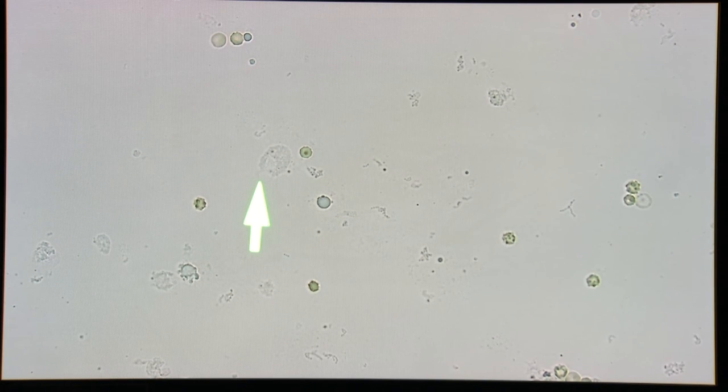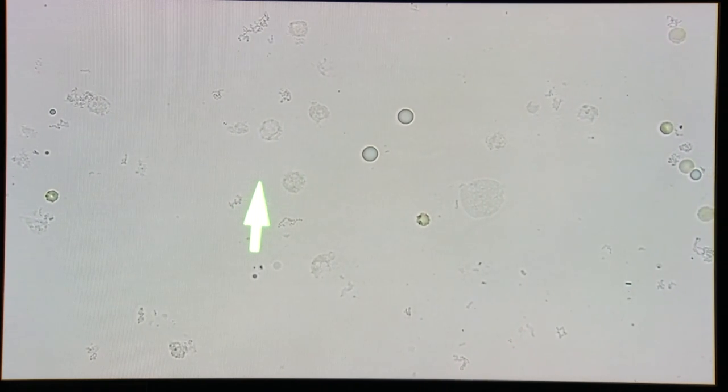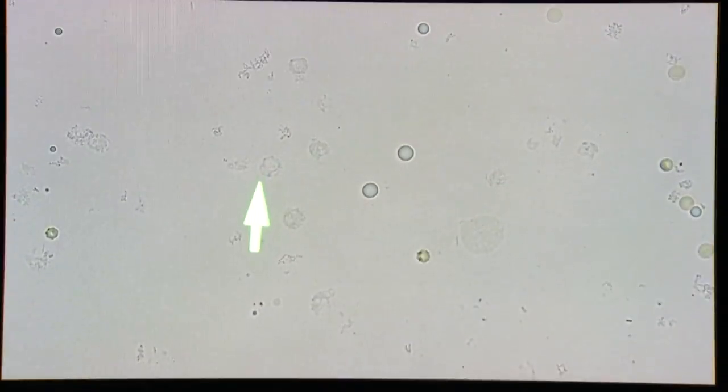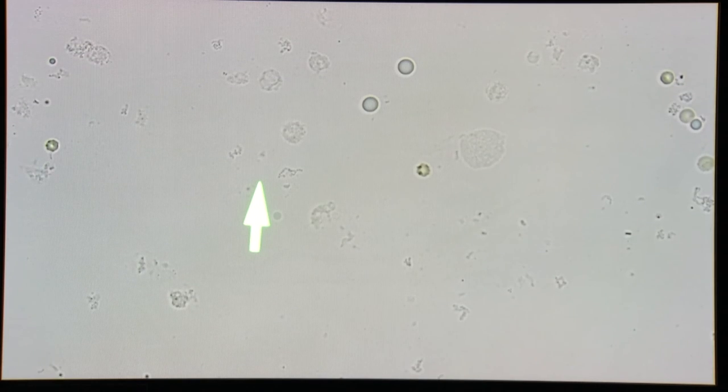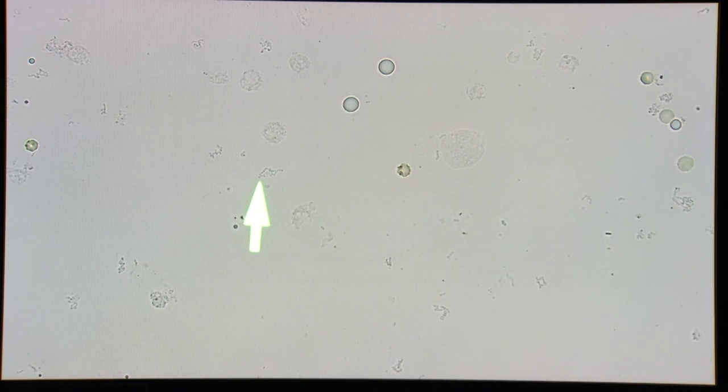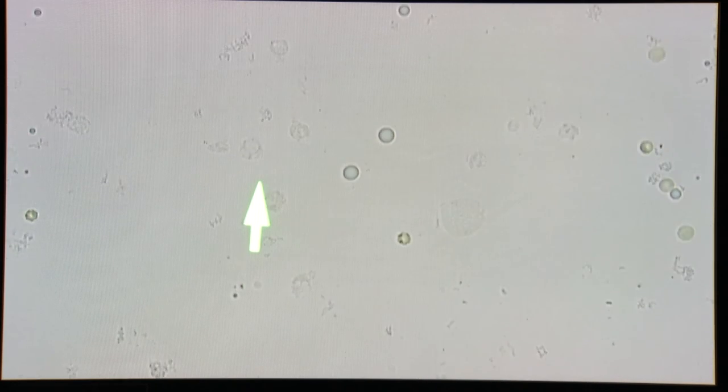We do have some white blood cells in here as well. Some of this other little stuff would probably be bacteria. Bacteria is very hard to see on urine sediments, so sometimes there are additional stains you can do or you can go up to 100 oil to help identify bacteria. That's basically how you would look at your urine sediment.